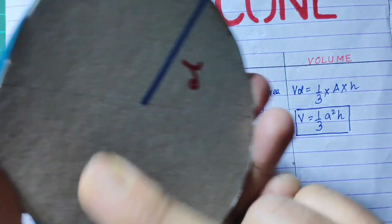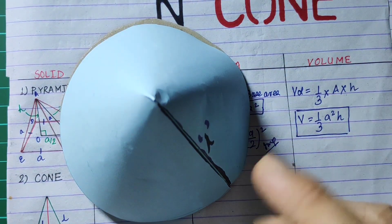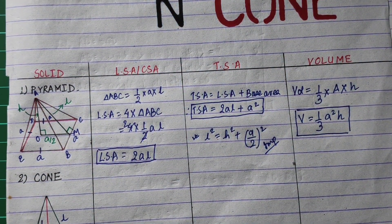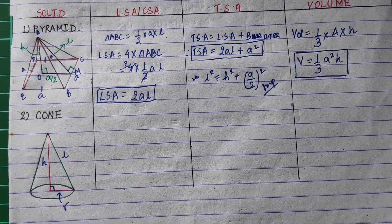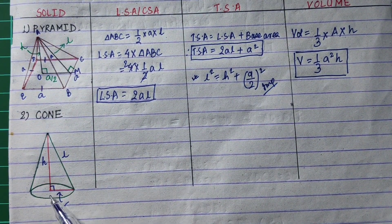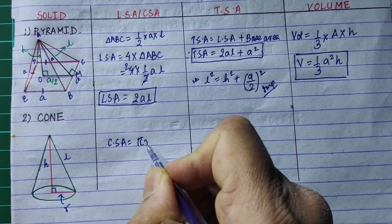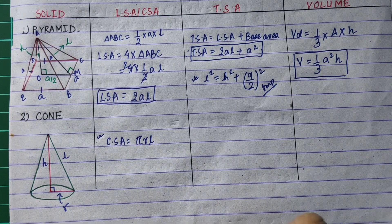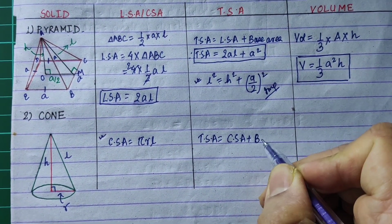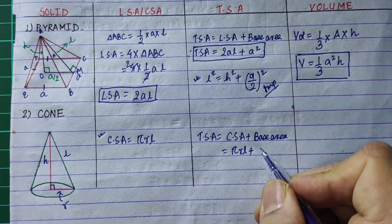Now we have the cone. TSA equals LSA plus base area. The cone has a slant height, a vertex, and a radius. The curved surface area, CSA, equals pi R L. The base area is a circle, which is pi R squared.